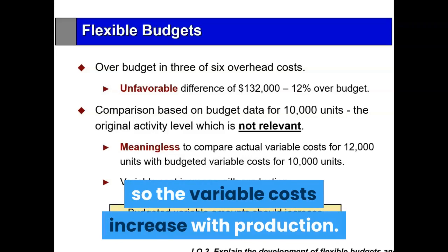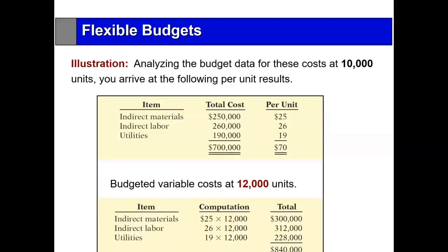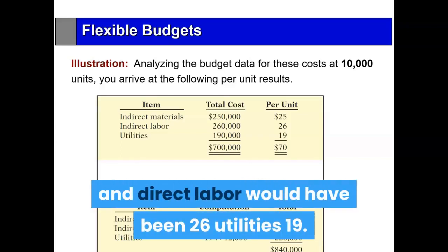Variable costs increase with production but fixed costs do not. To create a flexible budget, we look at how the budget was developed for 10,000 units. If total indirect material cost was $250,000 at 10,000 units, then on a per-unit basis it would be $25 per unit. Indirect labor would be $26 per unit, and utilities $19 per unit. Now let's redo the budget.